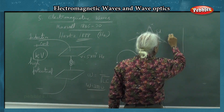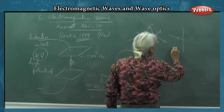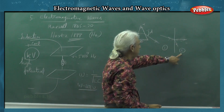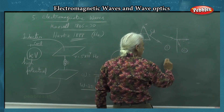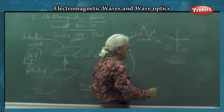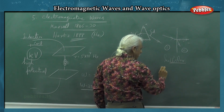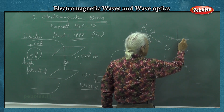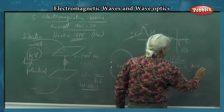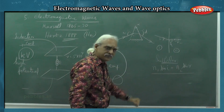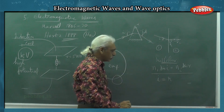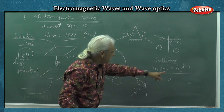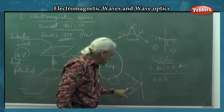Refraction: light goes from medium one to medium two and either bends away or bends towards the normal, depending on the refractive index density of the media. We study this with Snell's law from high school: n1 sin(i) equals n2 sin(r). For reflection, the angle of incidence equals the angle of reflection - this is the reflection law.